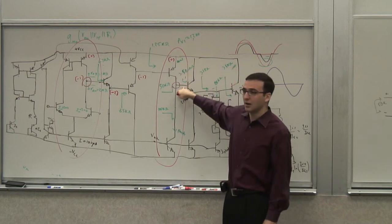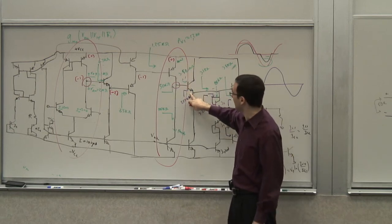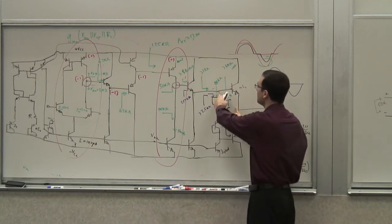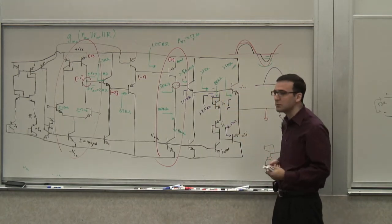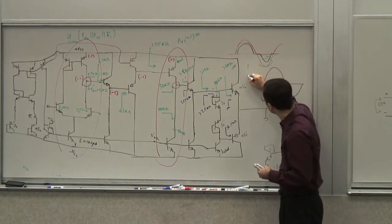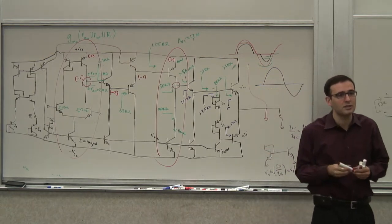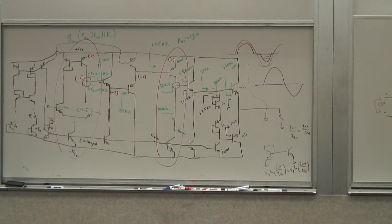If this is 10 volts, this is 9.3 volts. This becomes a huge VBE. So at least from an equation perspective, there's no limit on how much current can flow through here, particularly if it's a low impedance at the output. If I accidentally short the output, there's no limit — at least theoretically.